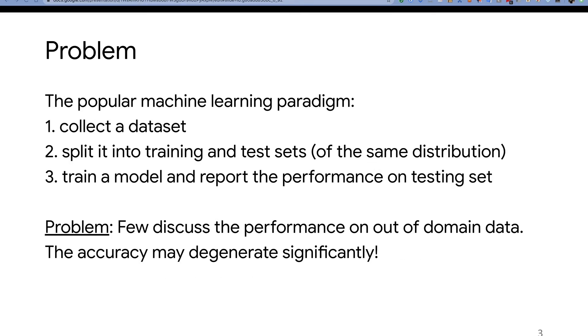So the problem - why is out-of-domain recognition an important problem? As of 2020, most popular machine learning work follows this paradigm: First, collect a dataset and split it into training and testing sets. Note that training and testing datasets are of the same distribution. At last, train a model on the training set and report performance on the testing set.